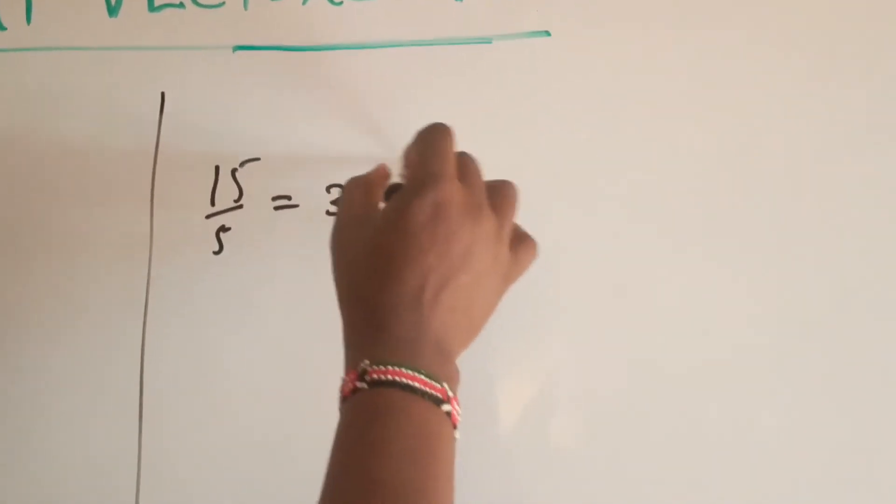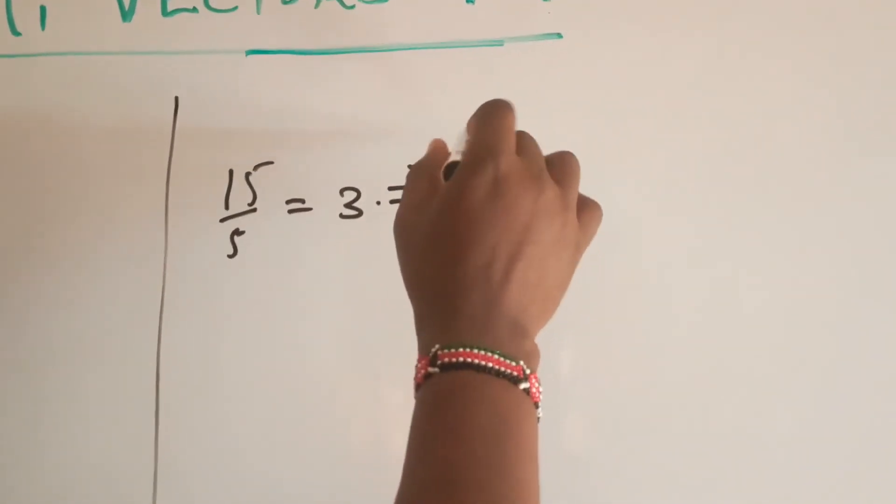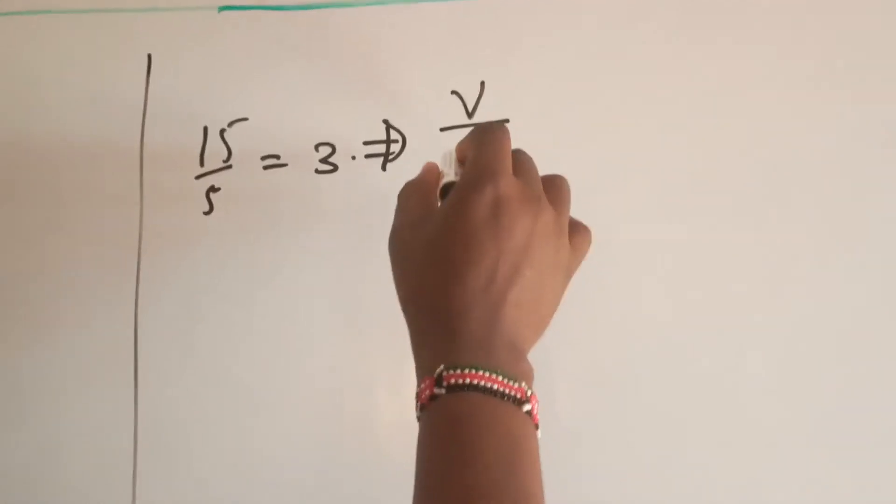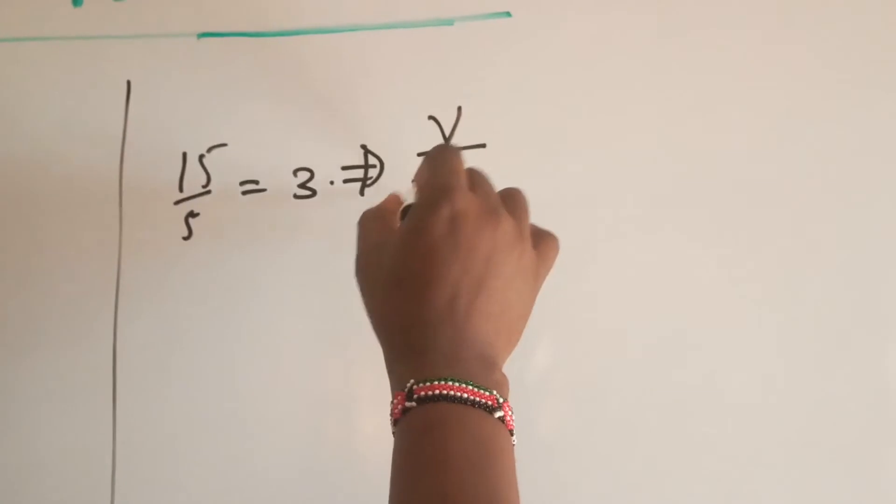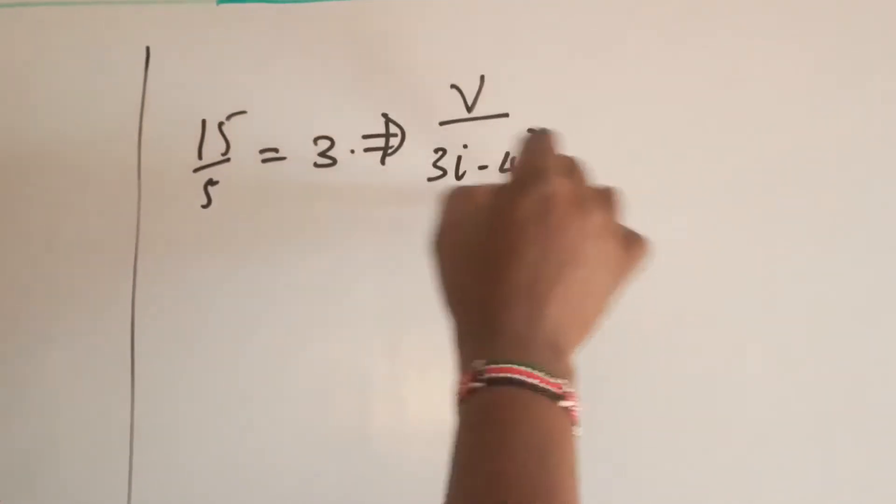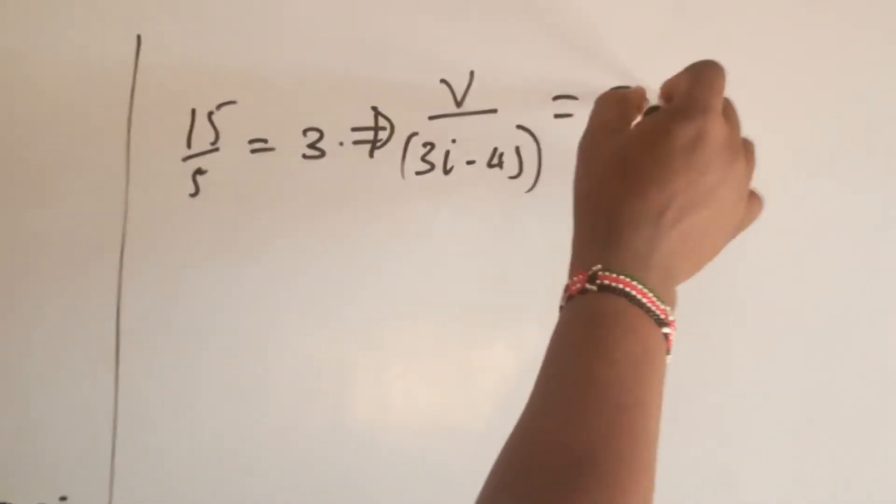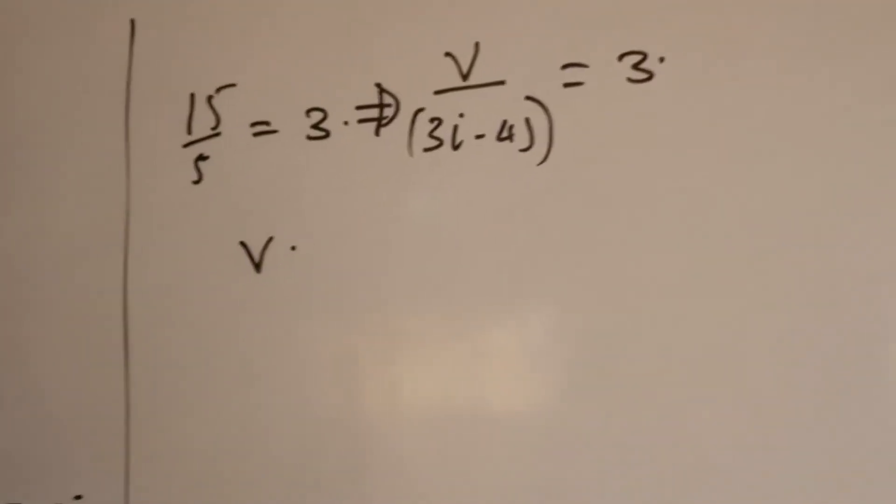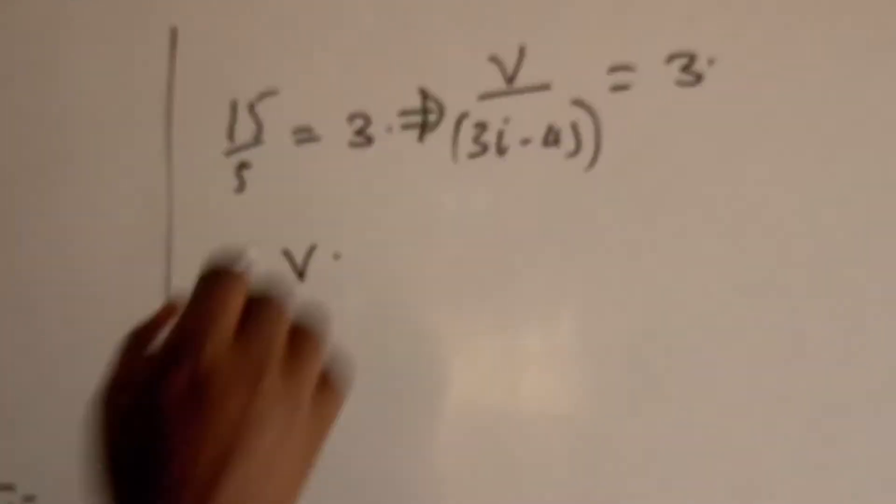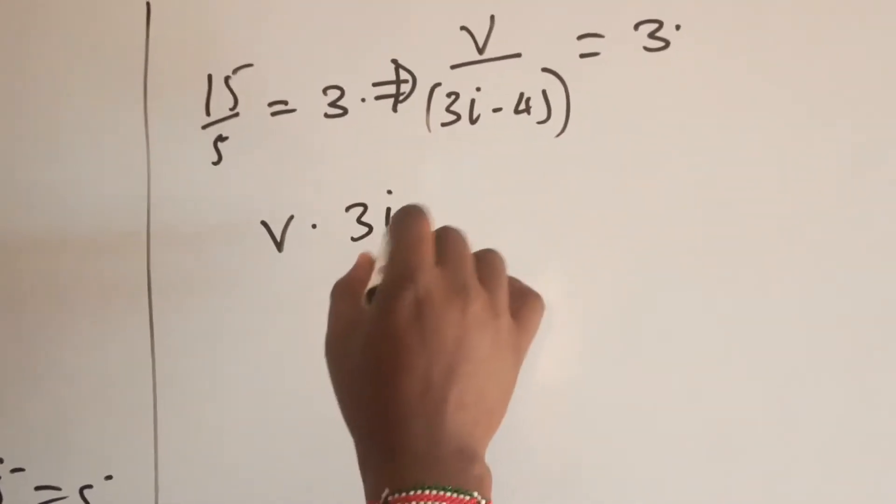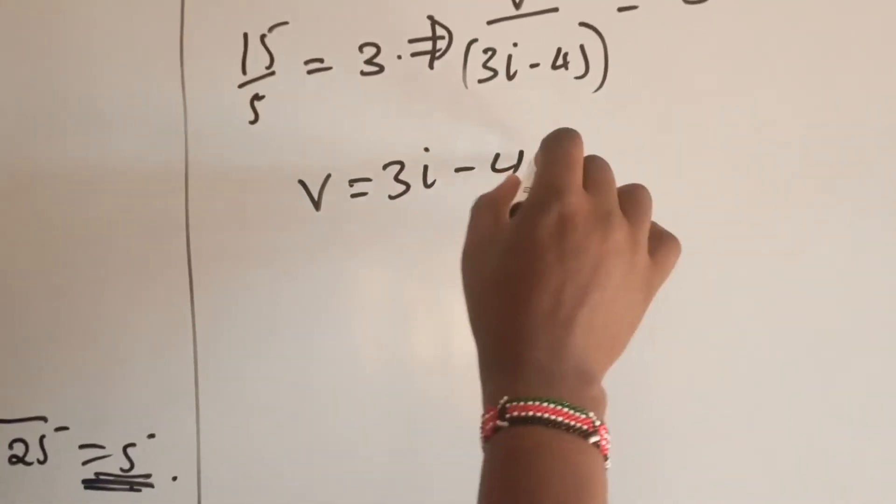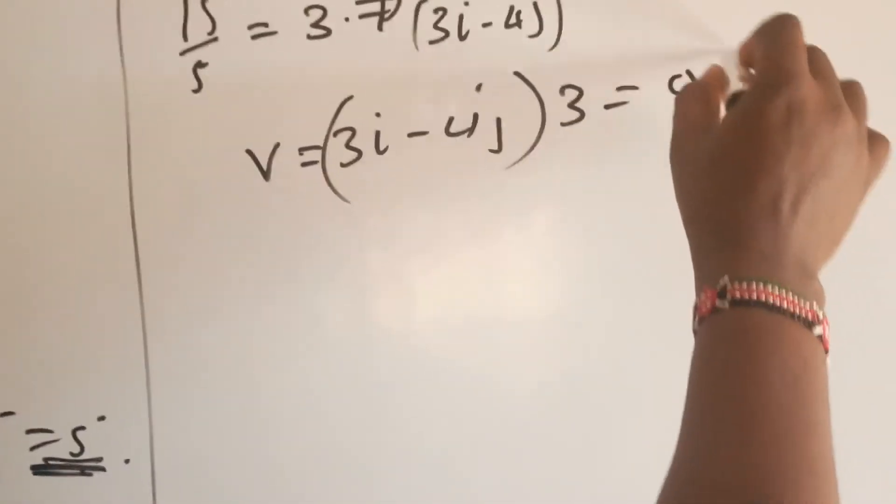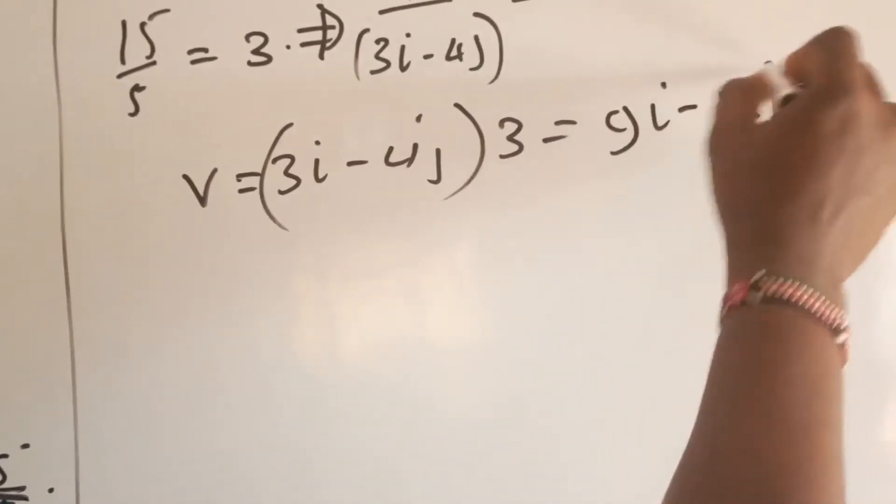And this means, therefore, a certain vector divided by 3i minus 4j should get a 3. So the vector you are looking for is 3i minus 4j multiplied by 3, which is 9i minus 12j.